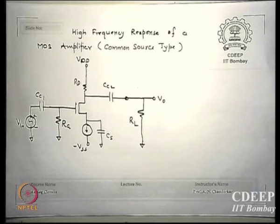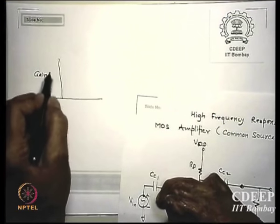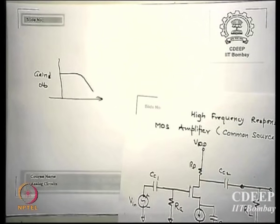In the op-amp experiment you must have observed there is a gain even at DC — that is, at 0 frequency — because op-amps can amplify DC. So there is no lower cutoff in op-amps. The response of an op-amp, if you see carefully, always looks like a flat gain in dB that starts from DC.